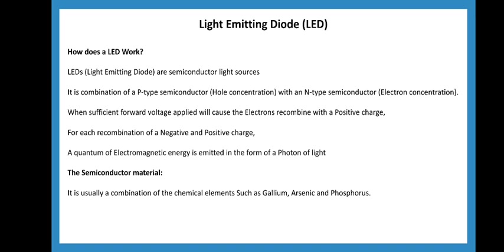In a PN junction diode, P-type material has holes and N-type material has electrons. When we increase the forward applied voltage, the depletion region breaks down, causing a flow of electrons and holes. The electrons combine with positive charge carriers — that is, recombination of charge carriers occurs. This recombination produces electromagnetic energy, and that electromagnetic energy is released in the form of a photon of light.